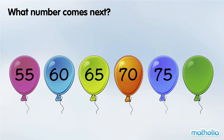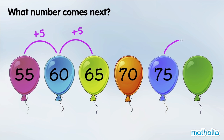What number comes next? 55 plus 5 is 60. 60 plus 5 is 65. In each step, the numbers go up by 5. 75 plus 5 is 80. The next number is 80.